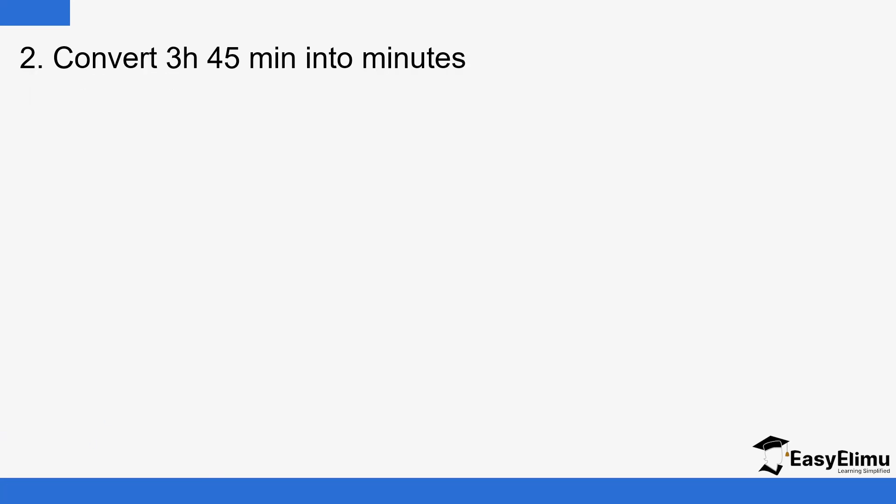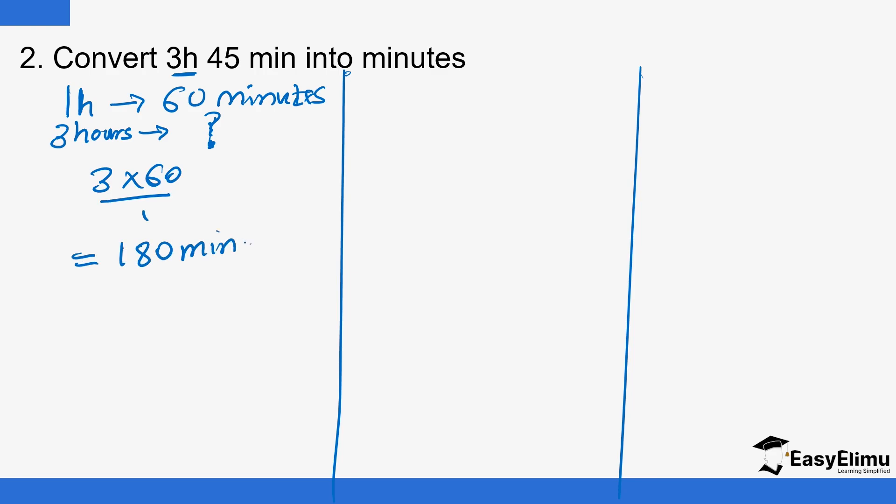Now convert 3 hours 45 minutes into minutes. I'll convert the 3 hours into minutes, then add the 45 minutes. One hour is 60 minutes, so three hours is 3 times 60, which equals 180 minutes.